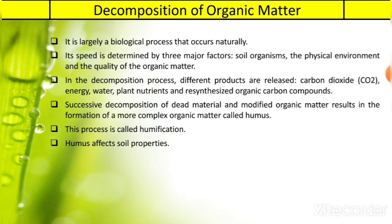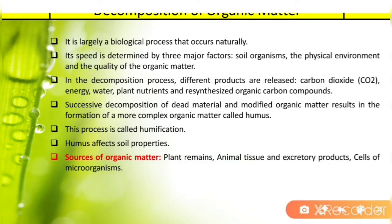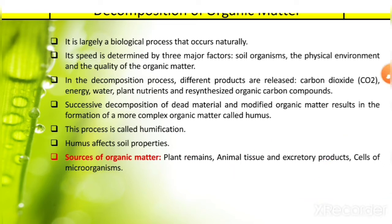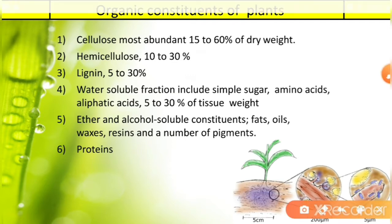Humus is important for soil fertility, and this process is called humification. Humus affects soil properties. The most important sources for organic matter are plant remains, animal tissue, excretory products, and cells of microorganisms. The next point is the organic constituents of plants — these are the important constituents involved in decomposition.